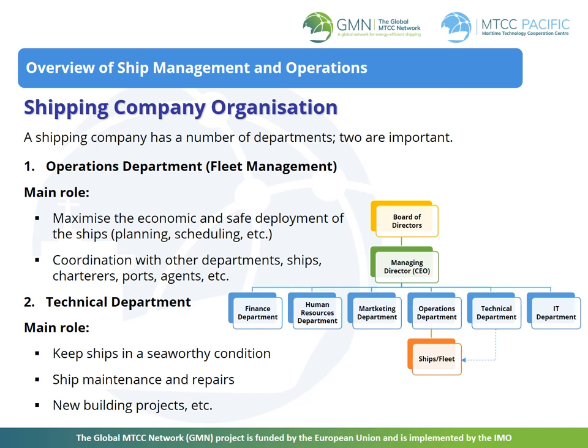The operations department is the most important department for a shipping company. The main job of this department is to maximize the economic and safe deployment of the ships through a number of activities, including planning and scheduling — that is, deciding where to send the ships and when. A significant level of coordination is done by this department, not only with other internal departments, but also with the ships, charters, ports, agents and so forth.